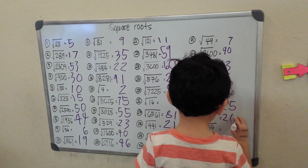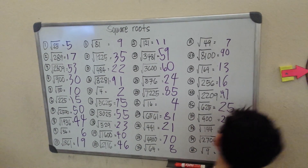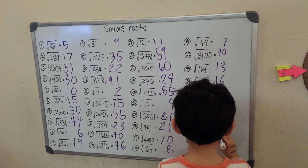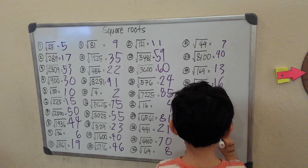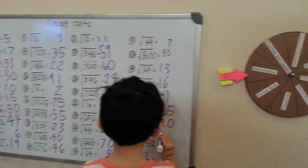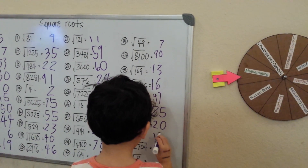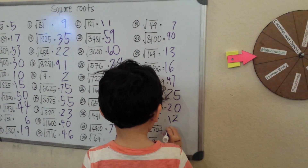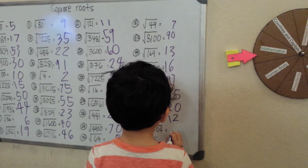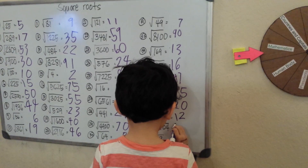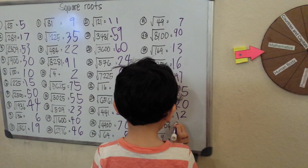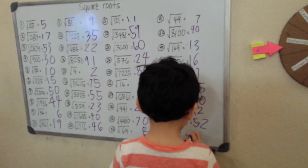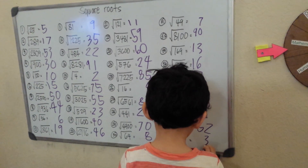Square root of 400, oh that's 20. Square root of 1414 is 12. Square root of 724 — let me think — oh it's 52. Square root of 9, it's 3. Thanks for watching and have a good day.